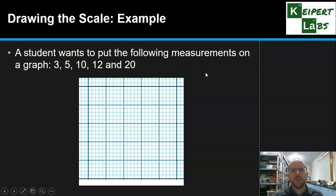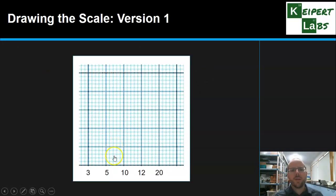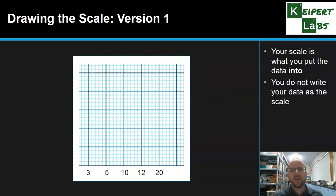Let's look at the first version the student might do. We write the numbers 3, 5, 10, 12, 20 on each of these medium boxes, or these kind of slightly bolder lines. But your scale is what you put the data into. The scale, you don't write your data, your measurements, as the scale.